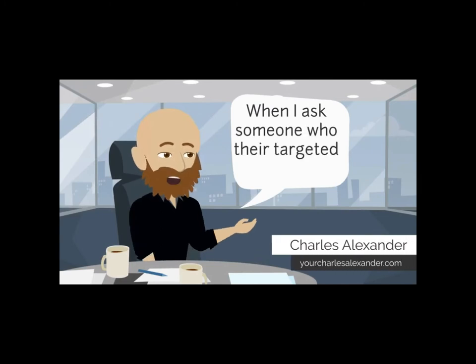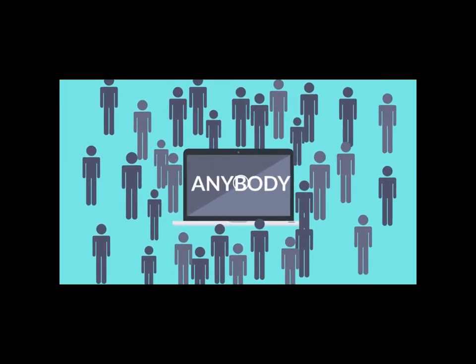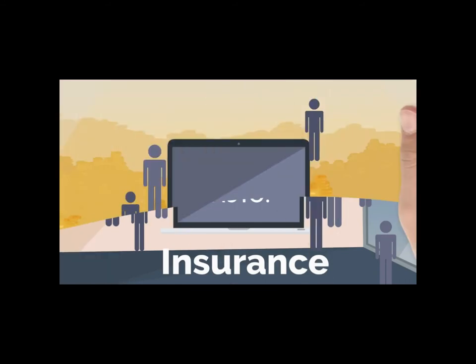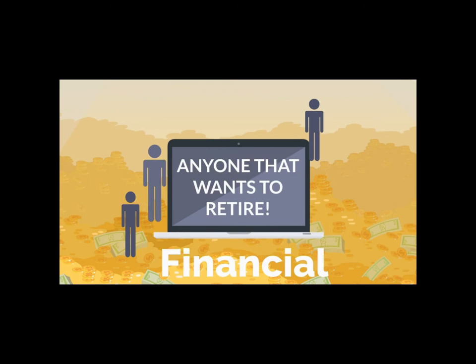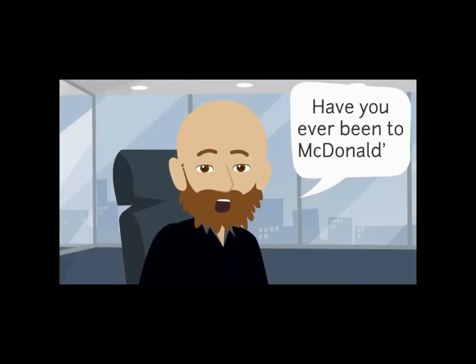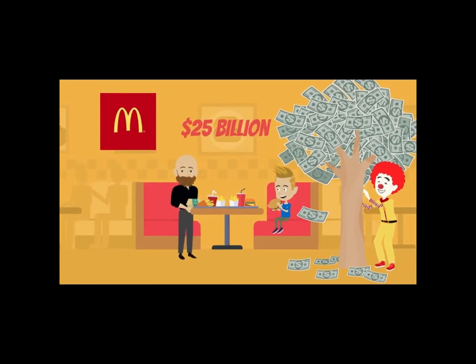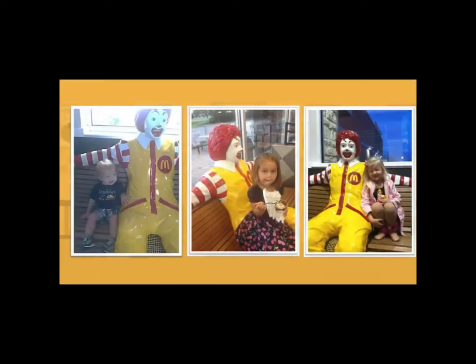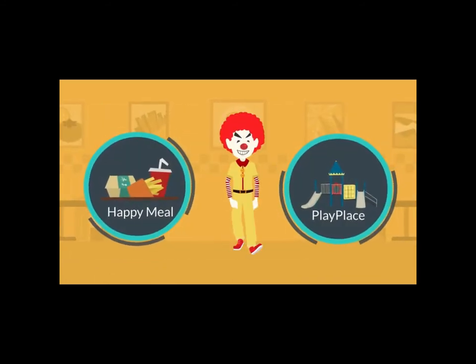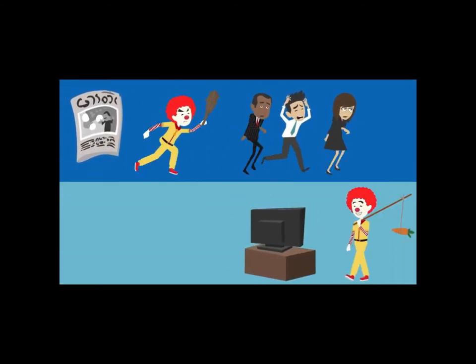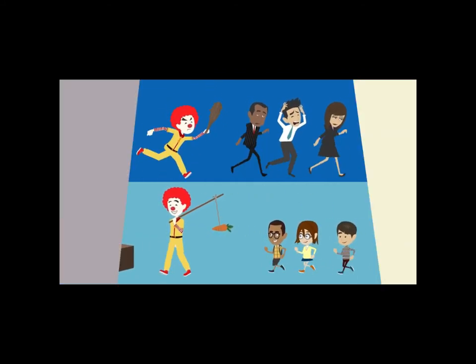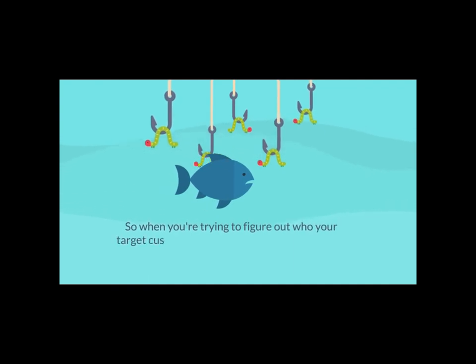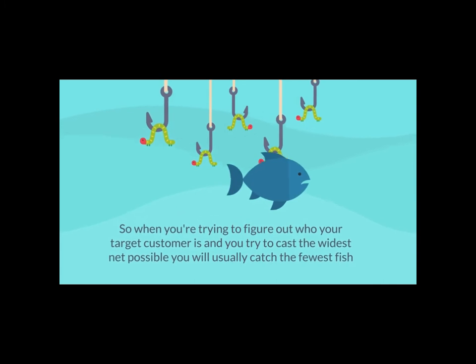When I ask someone who their targeted customer is, I almost always get the same answer: 'Well, our customer could be anybody.' We sell insurance so anybody that needs insurance. We're a financial planner so anybody who eventually thinks they need to retire. Think about McDonald's — a $25 billion company — they have a targeted customer base. Who do you think it is? It's kids. That's why they have the Happy Meal, play place, and that creepy clown. You don't see their advertising during the 24-hour news cycle or in the Wall Street Journal. You'll see it most of the time on kids' shows. So when you're trying to figure out who your targeted customer is and you try to cast the widest net possible, you'll usually catch the fewest fish.